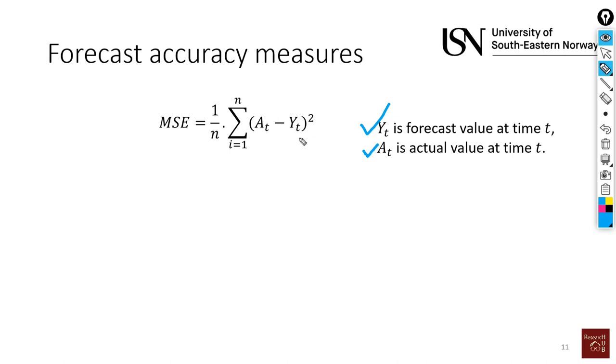What we do is we take the difference between actual and forecast, and we square it, and then we just take the average of all of these squared errors. When we take the difference, this is the error, and then we're just squaring the error and taking the mean of it. That's why we're calling it Mean Squared Error.